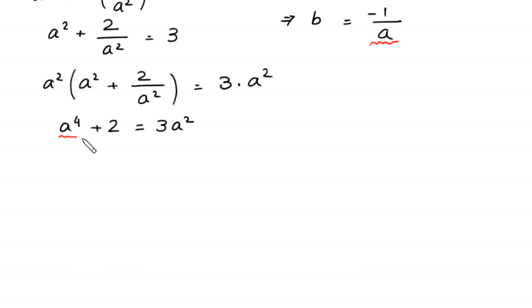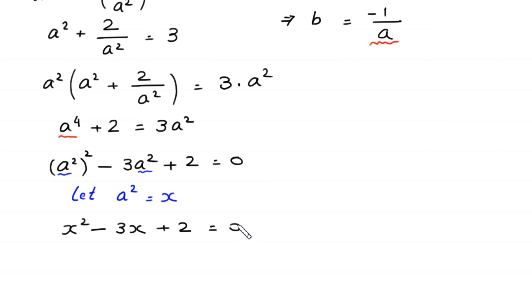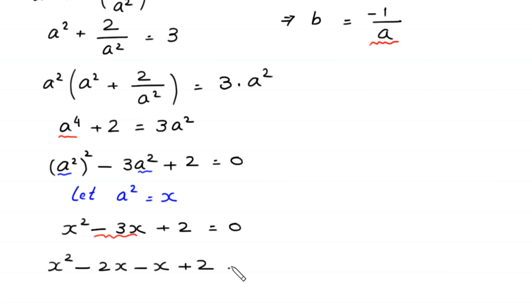We rewrite a⁴ as (a²)², move 3a² to the left to get (a²)² − 3a² + 2 = 0. We let x = a², so the equation becomes x² − 3x + 2 = 0, which is a factorable quadratic.